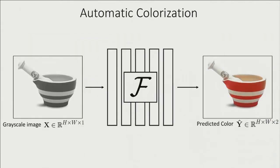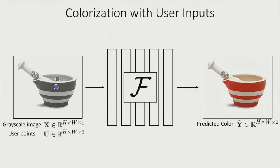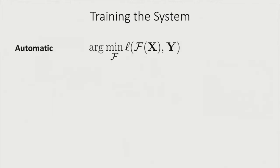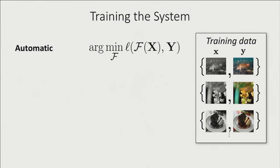In automatic colorization, a network maps a grayscale image to a predicted colorization — from X to Y. We'd like to also incorporate user points as input. Training this can be seen as a classic supervised learning problem: we gather grayscale and color image pairs, look at our current predicted colorization F(X) versus the ground truth Y, compute the loss, and adjust network parameters to minimize it. For a user-guided approach, we simply add another input to the system.